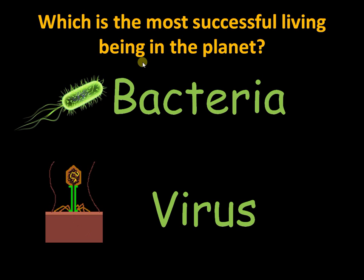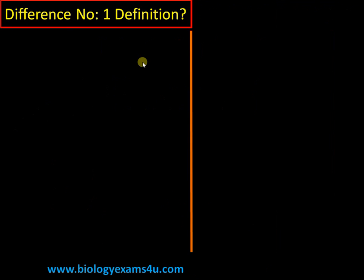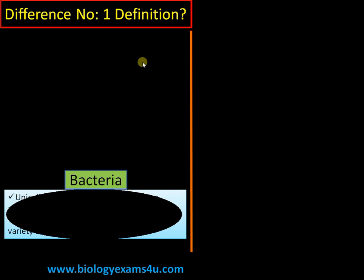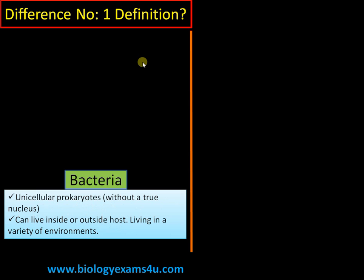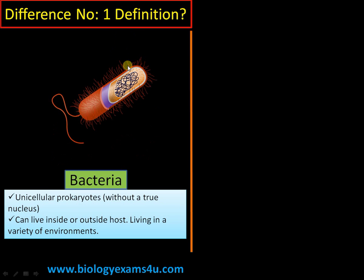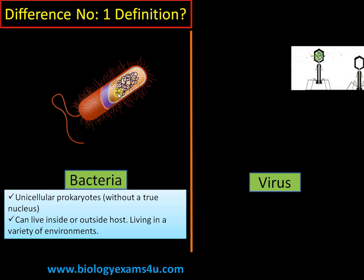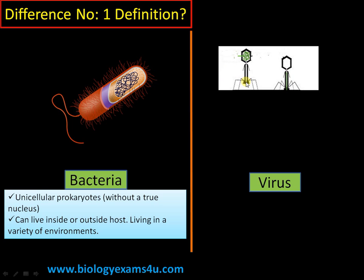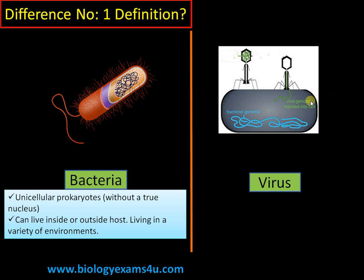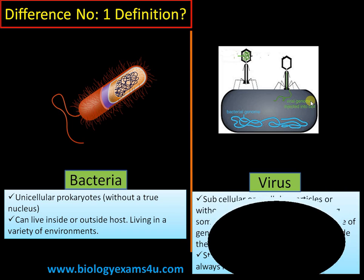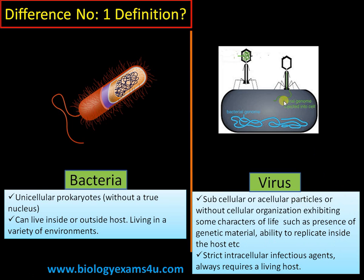Difference number one: the definition. Bacteria are unicellular prokaryotes — organisms where genetic material is not surrounded by a nuclear membrane, as in eukaryotes. Whereas viruses are subcellular particles; they don't have a cellular organization. Viruses exhibit some characteristics of life, as they have genetic material and can replicate inside a host using the host's machinery.